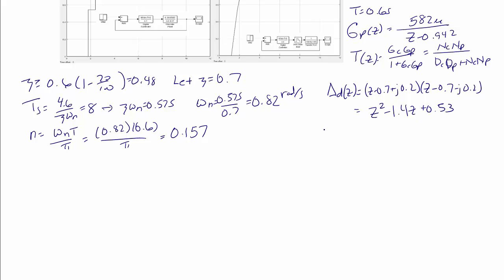So I'm going to give us another form for our controller to help writing the delta of z for that in terms of kp and ki. So I'm going to have kp plus ki times z minus kp over z minus 1. So using our general form for our characteristic equation, dcdp plus ncnp, this is the numerator of the controller, the denominator of the controller. This is the numerator of the plant and the denominator of the plant.